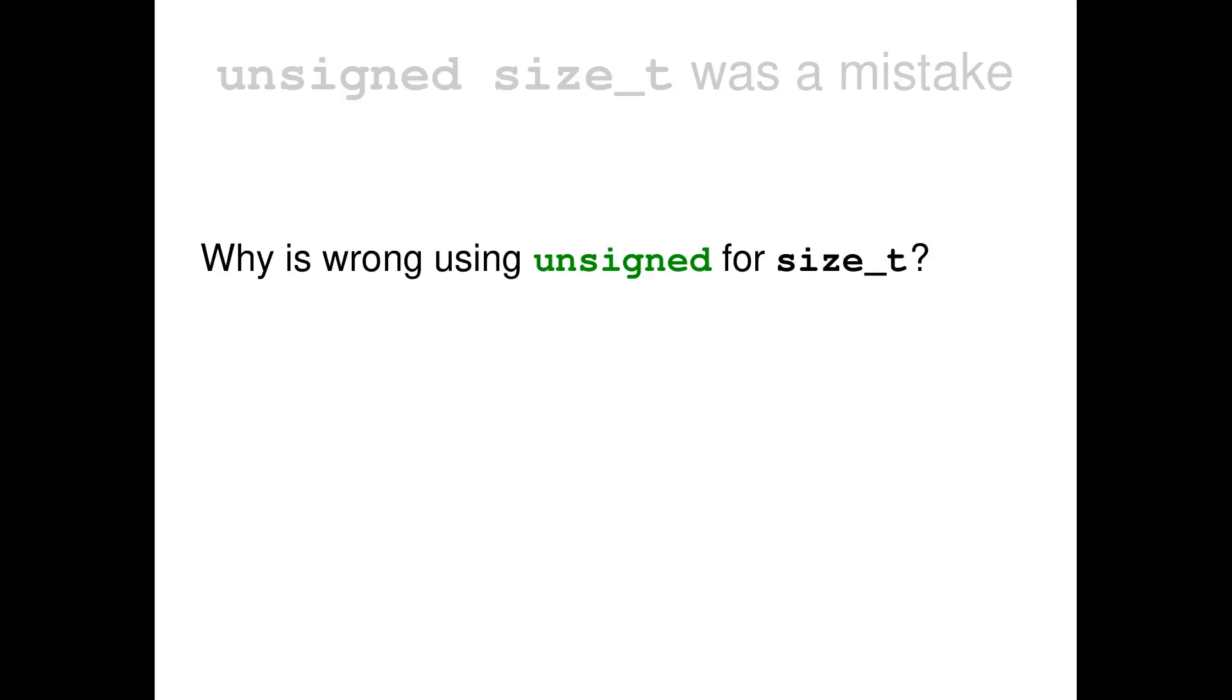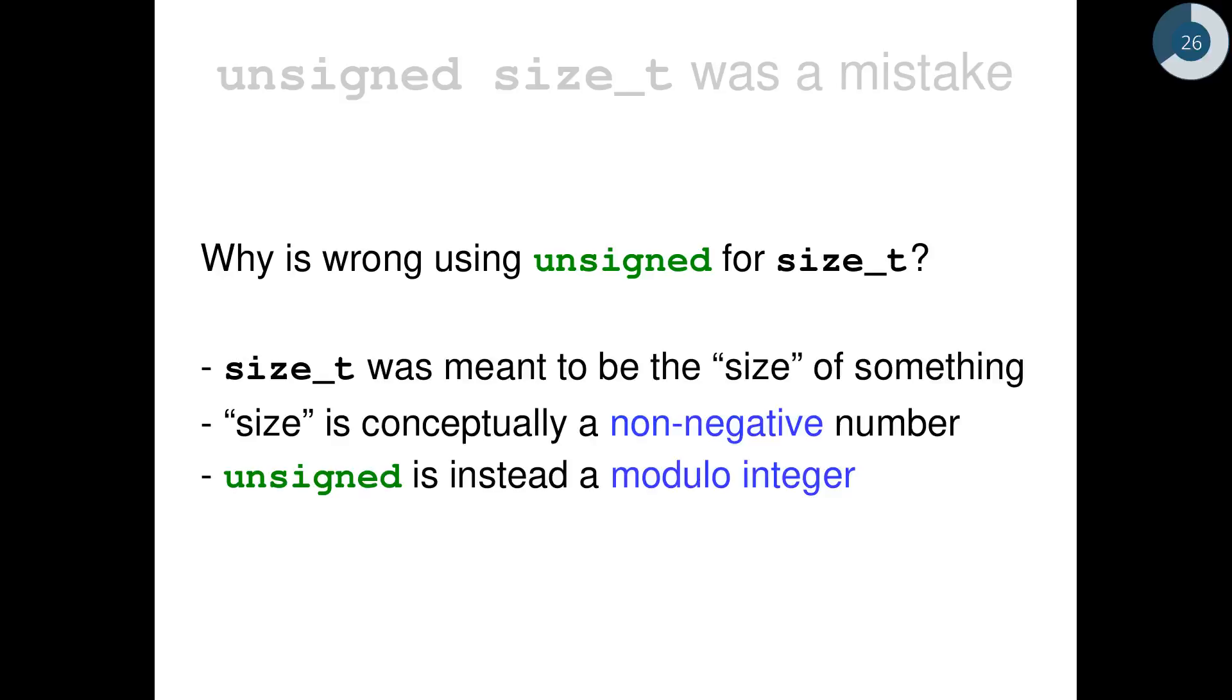And why is it wrong using unsigned for size_t? That's the key point of this presentation. The problem is that size_t was meant to be the size of something. Actually, it was the number of elements in a container. And the size was conceptually a non-negative number. And we just saw that unsigned means something different. It means modulo integral. It does not mean non-negative. So there is really a conceptual difference. Conceptually, they are two different things.